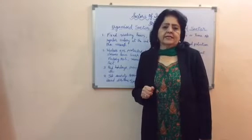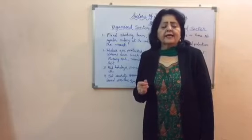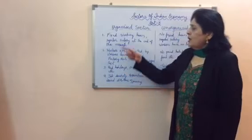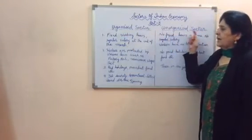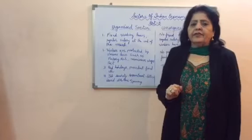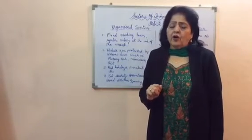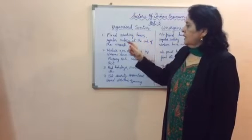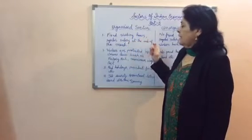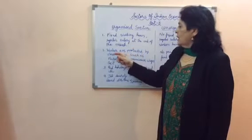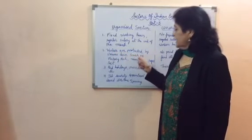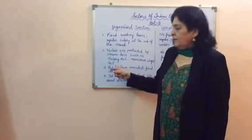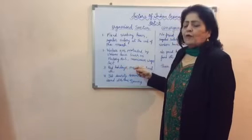From these examples we can classify workers into two categories: organized sector and unorganized sector. Features of workers in the organized sector include fixed working hours, regular salary at the end of the month, and protection by various laws such as the Factory Act, Minimum Wages Act, paid holidays, and provident fund.